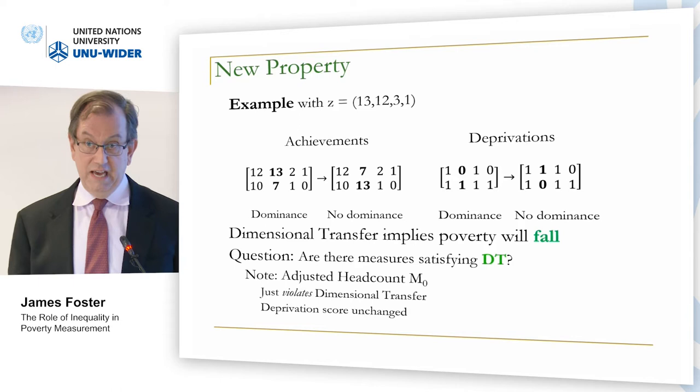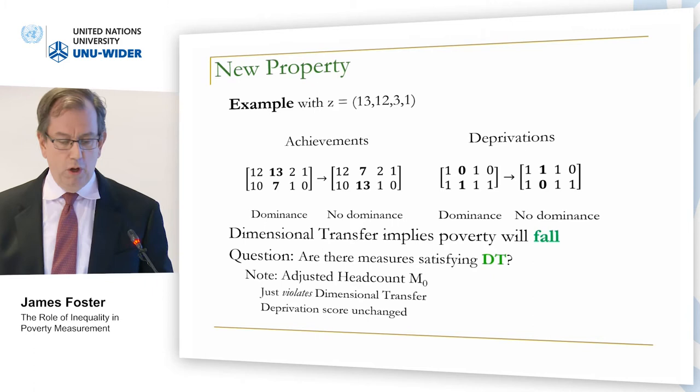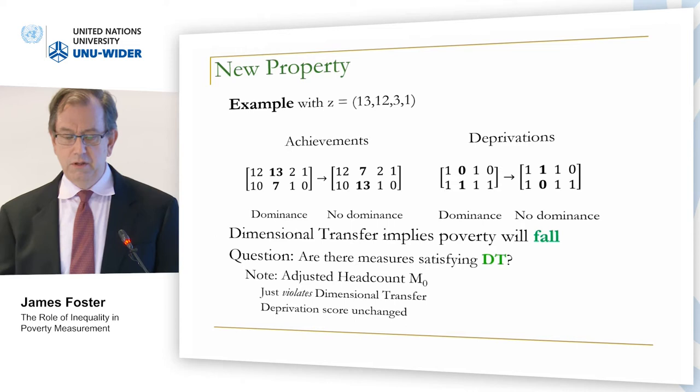Here's a two-person example: one person has more than the other in every dimension — they're poor. In the second indicator they switch, so the dominance is removed. Going to the deprivation matrices, they have switched a deprivation. If both things happen, inequality has fallen according to the Atkinson-Bourguignon approach. Dimensional transfer implies poverty should fall. But certainly not the adjusted headcount ratio M0 — it just violates this.